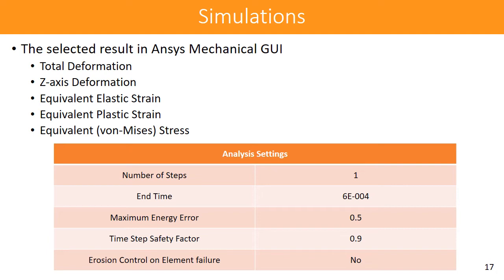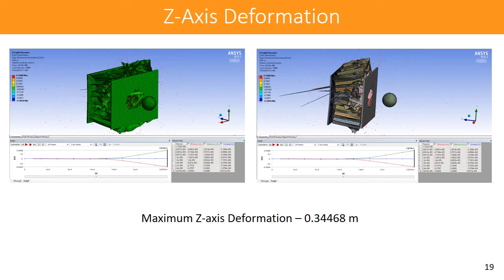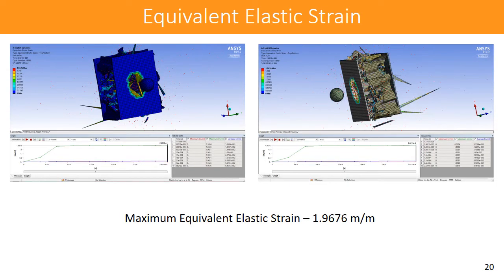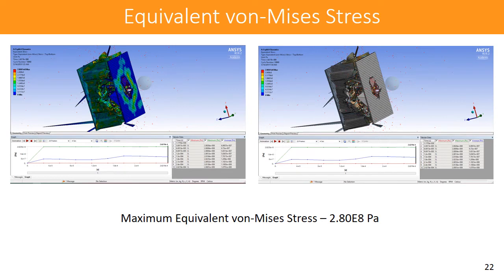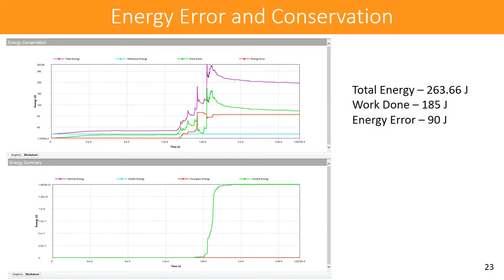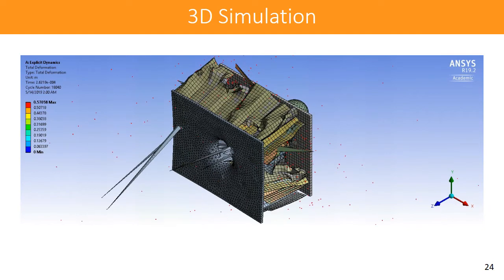For the aluminum plate case — where aluminum plates are assigned on either side of the honeycomb — the results are: total deformation is 0.57 m, Z-axis deformation is 0.34 m, equivalent elastic strain is approximately 2, equivalent plastic strain is 1.22, and equivalent von Mises stress is around 2.8×10⁸ Pa. In terms of energy, the total energy absorbed reaches approximately 260 J, with an energy error of 90 J.